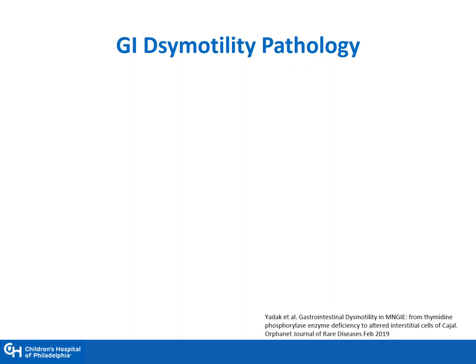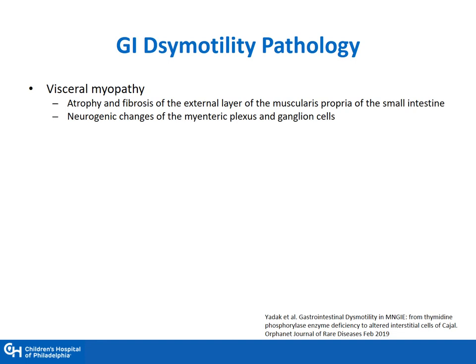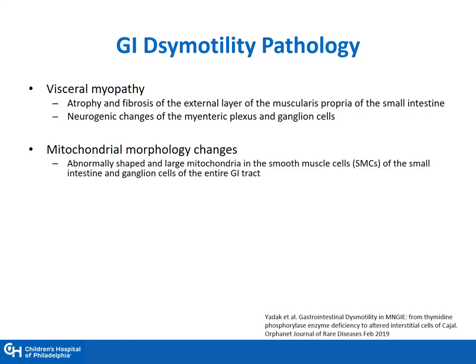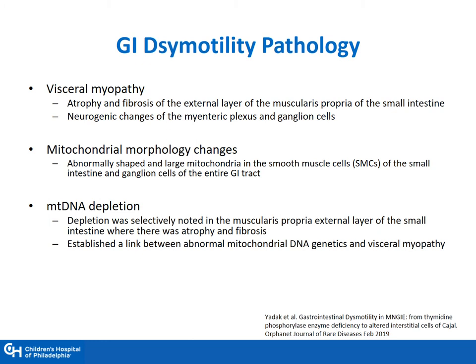When we think about GI dysmotility, we need to understand the pathology behind it. Patients with MNGIE have visceral myopathy. There is atrophy and fibrosis of the external layer of the muscularis propria of the small intestine, as well as neurogenic changes to the myenteric plexus and ganglion cells. The mitochondria are abnormally shaped and can be large in the smooth muscle cells of the small intestine, as well as ganglion cells of the entire GI tract. Mitochondrial DNA depletion was selectively noted in the muscularis propria, establishing a link between abnormal mitochondrial DNA genetics and visceral myopathy.